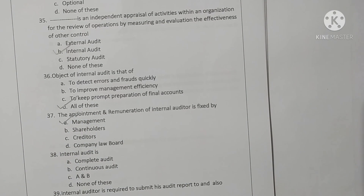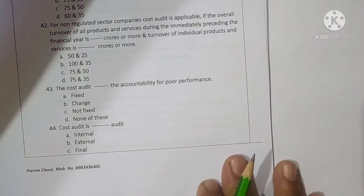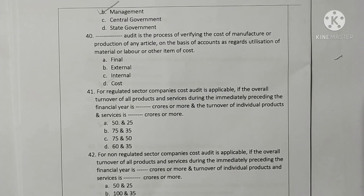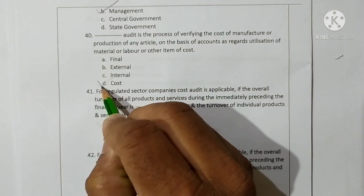Internal audit is both a complete audit and a continuous audit — option C (A and B) is correct. Internal auditor is required to submit his audit report to, and is also responsible to, management — option B is correct. Question 40: Cost audit is the process of verifying the cost of manufacture or production of any article on the basis of accounts as regards utilization of material, labor, or other items of cost — option D is correct.